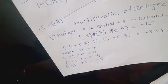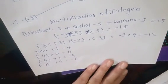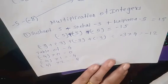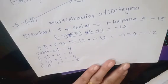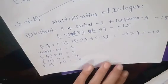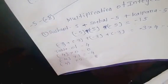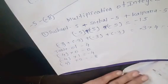Now let us look at the sign rules. Positive number multiplied by positive number is equal to positive. The product of one positive number and one negative number is negative — positive multiplied by negative is equal to negative. The product of two negative integers — negative multiplied by negative — is equal to positive. Did all of you understand this?